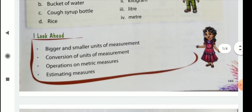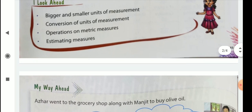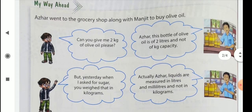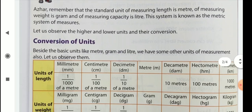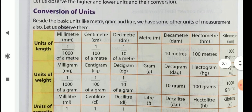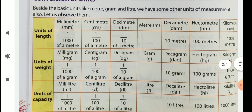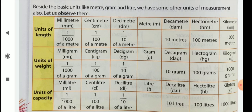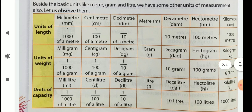So first we see the bigger and smaller units of measurement. Here children, one table is given in your book, the conversion table. Here you can see, first given units of length, second row is given units of weight, and third one is units of capacity.